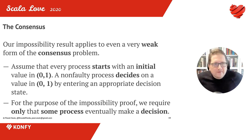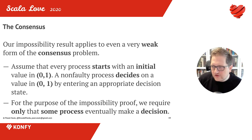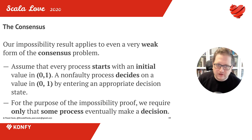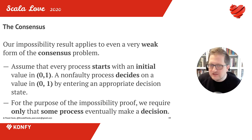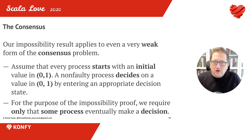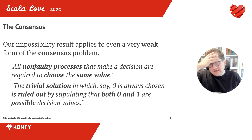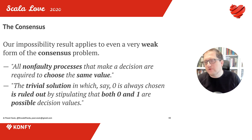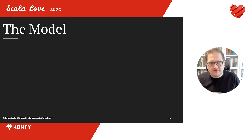Let's first talk about the consensus in that paper that they were trying to find a solution for. Originally, they were looking at how many nodes might fail in order for some algorithm to reach a consensus in an asynchronous network. They started with a very weak form of the consensus problem. They said they only want to decide on a binary value — either zero or one — and not even all nodes need to reach that conclusion. If some processes eventually make a decision, they're good. That's a very weak form of a consensus problem. Some processes may fail, but those that will not fail have to choose the same value. They also ruled out the trivial solution where everybody says zero — they ruled that out by saying both zero and one are possible decision values.